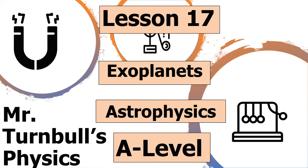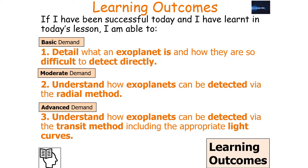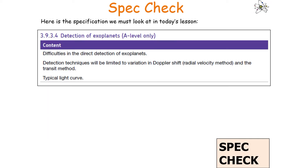In today's lesson, we're going to look at understanding how to detect exoplanets. If we've been successful, we should be able to detail what an exoplanet is and how they are so difficult to detect directly, understand how exoplanets can be detected via the radial method, and understand how exoplanets can be detected via the transit method, including the appropriate light curve. This is linked to AQA A-level physics specification astrophysics option 3.9.3.4, the detection of exoplanets.